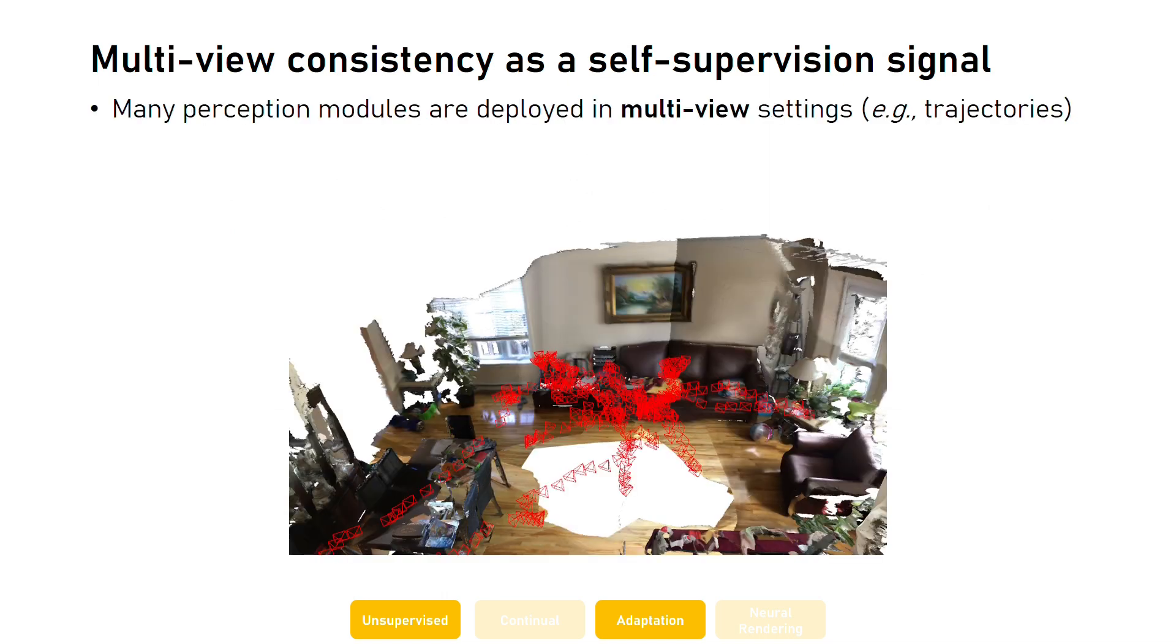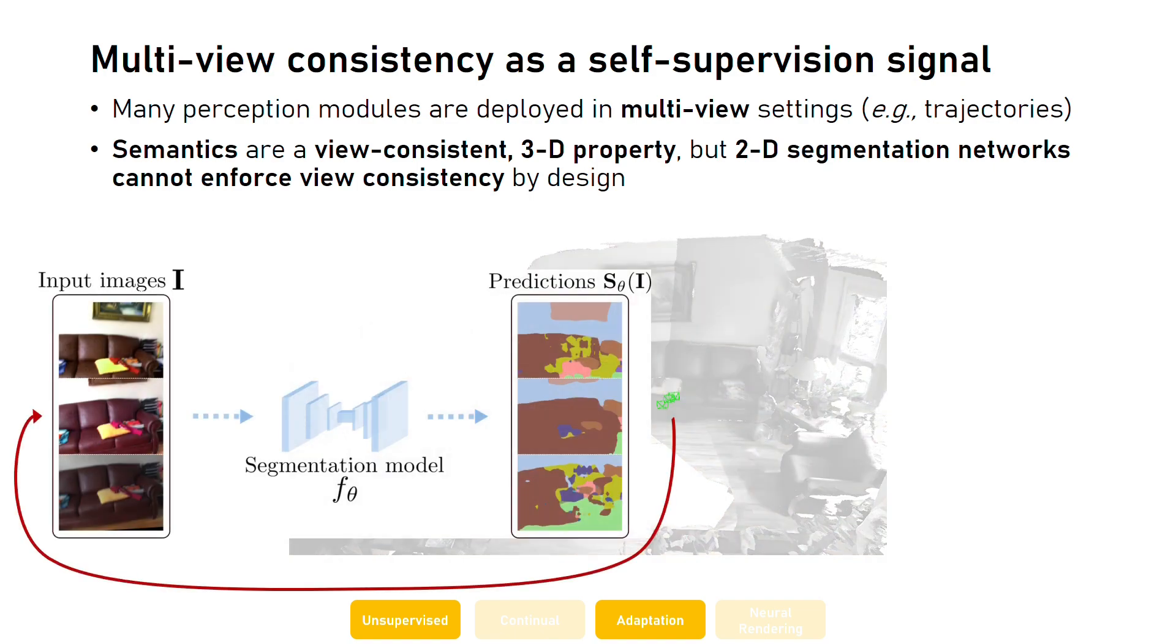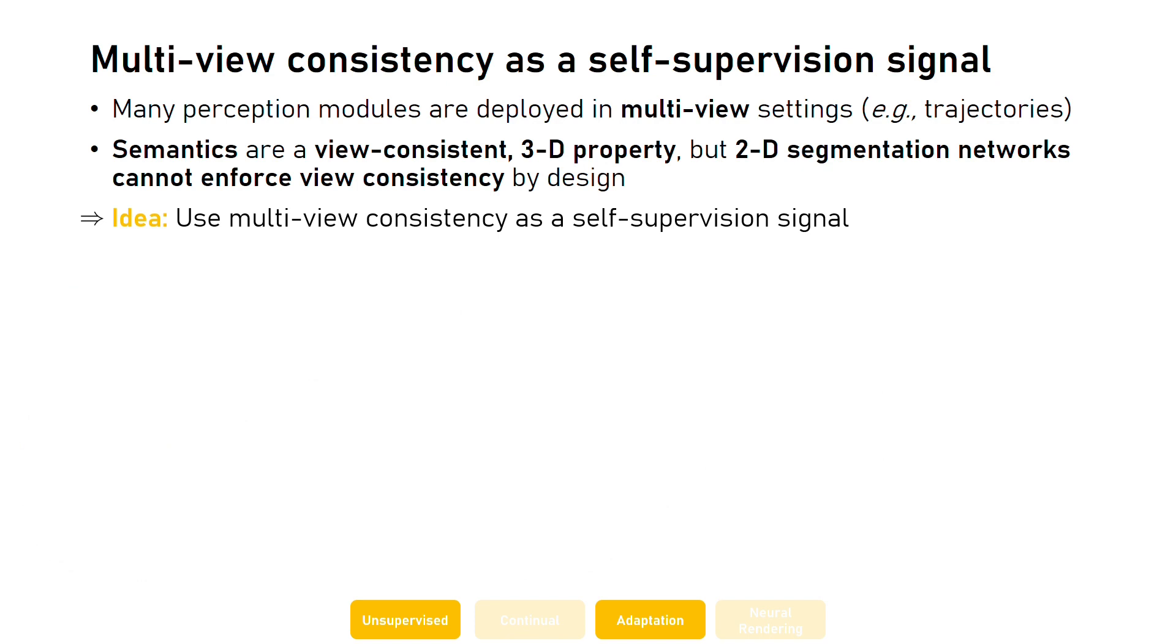A key observation that we make use of is that many perception modules are deployed in a multi-view setting, as for instance trajectories in a scene. At the same time, semantics are a view-consistent 3D property, but 2D segmentation networks cannot enforce this view consistency by design. As a result, different observations of the same part of a scene might be assigned different semantic labels by the network. In this work, we propose to make use of multi-view consistency as a self-supervision signal to adapt the network.